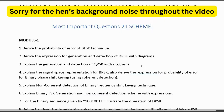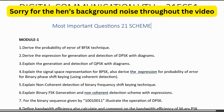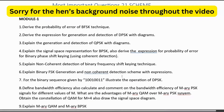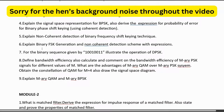In Module 1, important topics include deriving the expression for probability of error of BFSK (Binary Frequency Shift Keying), and generation and detection of DPSK with diagrams. Also important are QPSK (Quadrature Phase Shift Keying) and BPSK (Binary Phase Shift Keying). Explain the non-coherent detection of binary frequency shift keying. Problems based on a binary sequence like 1,0,0,1,0,0,1,1 to illustrate DPSK operation are also important, along with definition of bandwidth efficiency and explanation of M-ary QAM and M-ary BPSK.